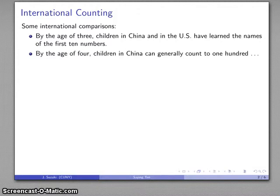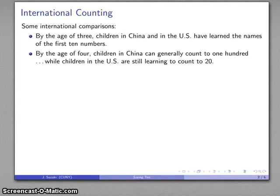By the age of 4, children in China can generally count to 100. Meanwhile, children in the U.S. are still struggling to learn to count to 20.